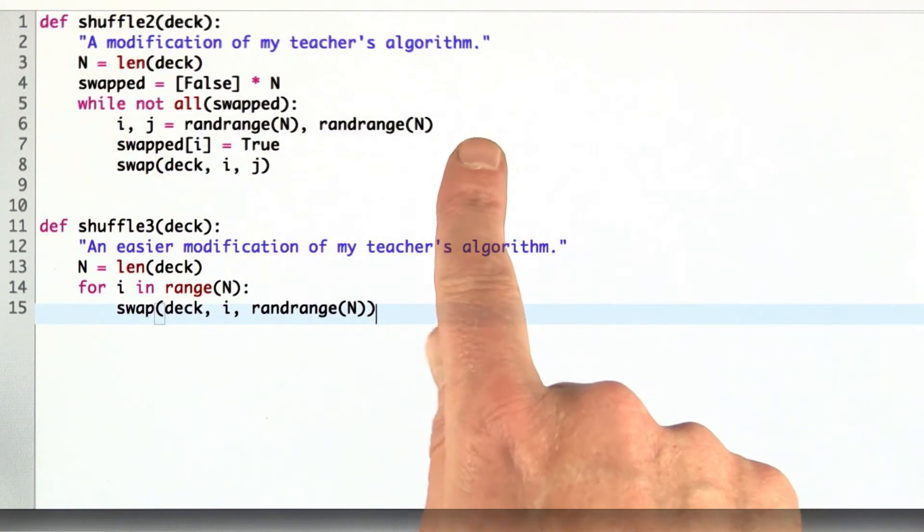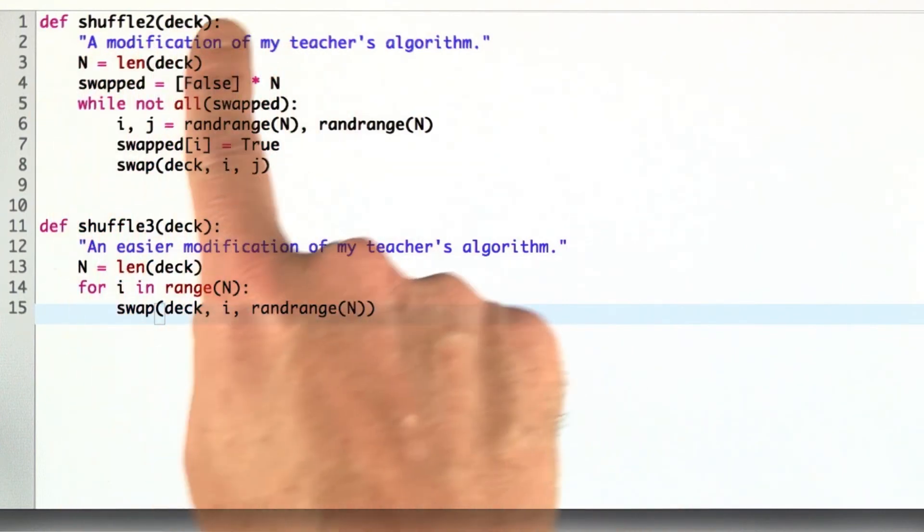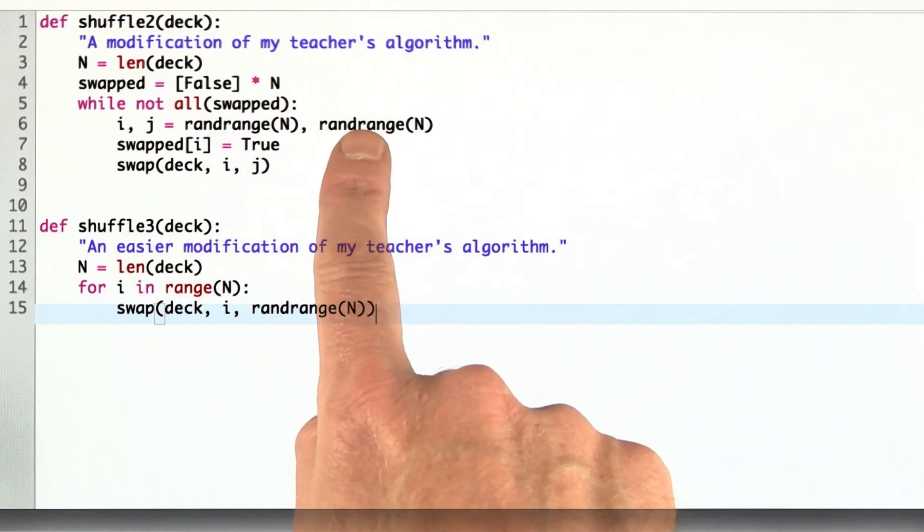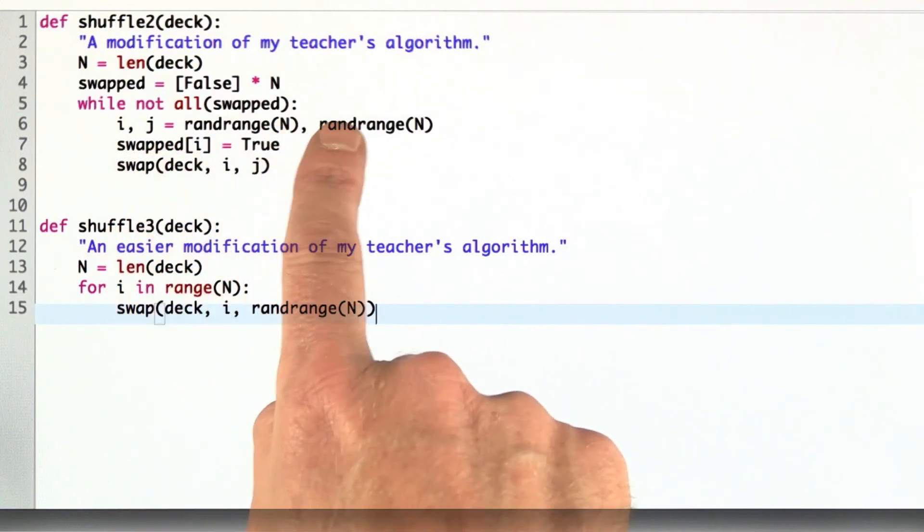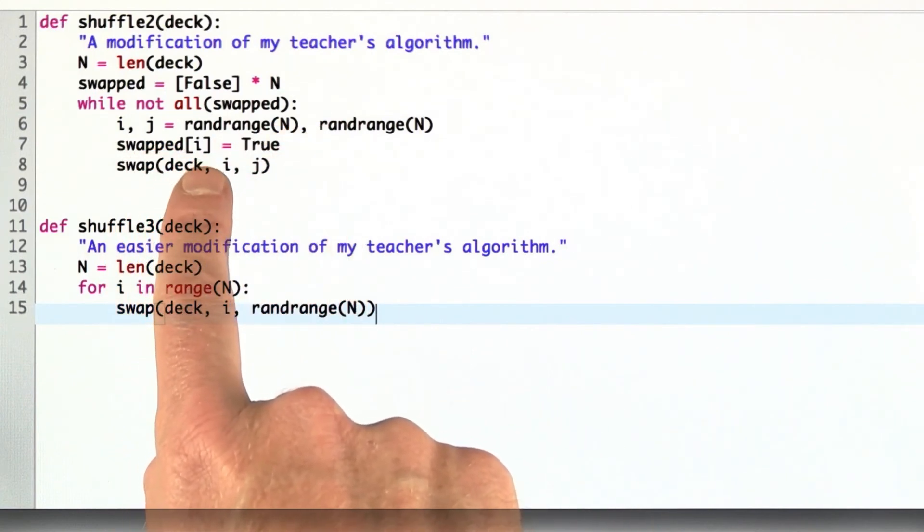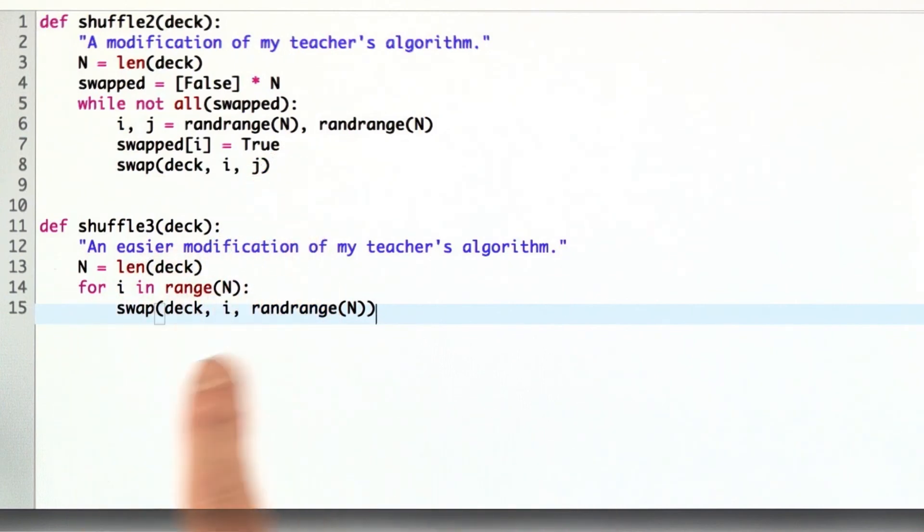Now, we saw that the function shuffle1 was not a good function, so I'm trying to fix it up. I have two attempts here called shuffle2 and shuffle3. We can see what's going on here in shuffle2. It's almost the same as shuffle1, except when I pick out two random indices to swap, I'm only saying that swapped of i is true, and I'm not saying that swapped of j is true. Otherwise, it's the same. In shuffle3, I go through the deck. Rather than have a while loop, I just go through the deck for each of the indices and swap that index with something in the random range of n. In other words, we swap each of the elements in the deck with any one of the other elements.